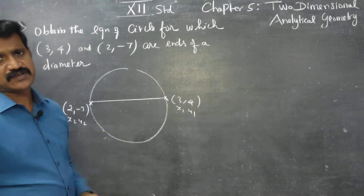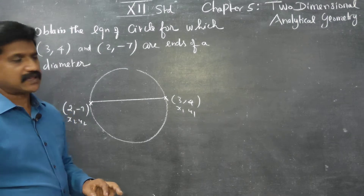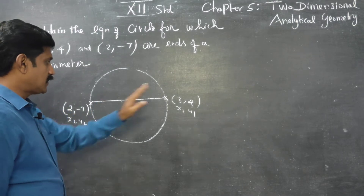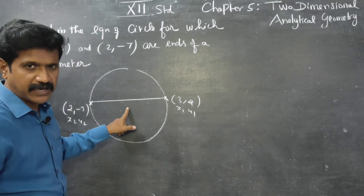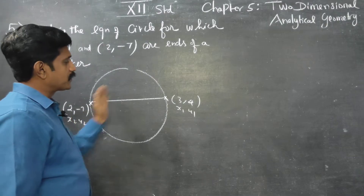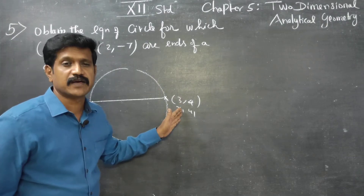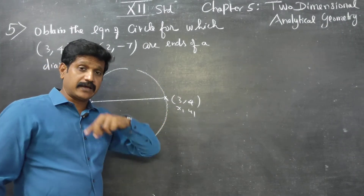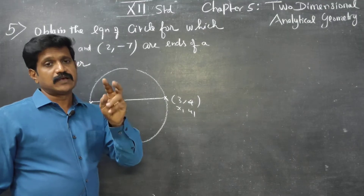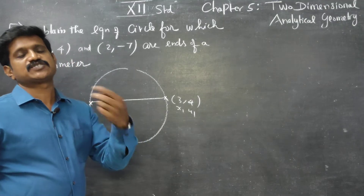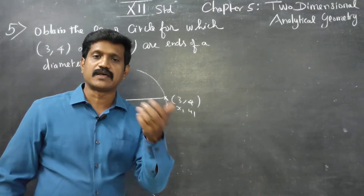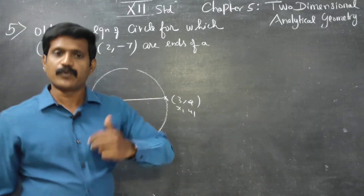We are asked to find the equation of the circle. There are two ways of doing this. The first method uses the center (h, k), then applies the distance formula to find the diameter, divides by 2 to get the radius, and uses: (x − h)² + (y − k)² = r².